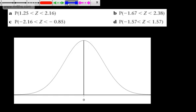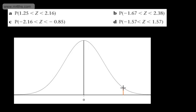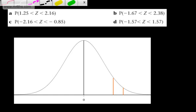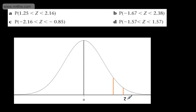Let's start. We'll place these two values up here: this is going to be 2.16, and this will be 1.25. So we're interested in the shaded area to the left of 2.16 and to the right of 1.25, and this gives us the probability that Z is between these two values.